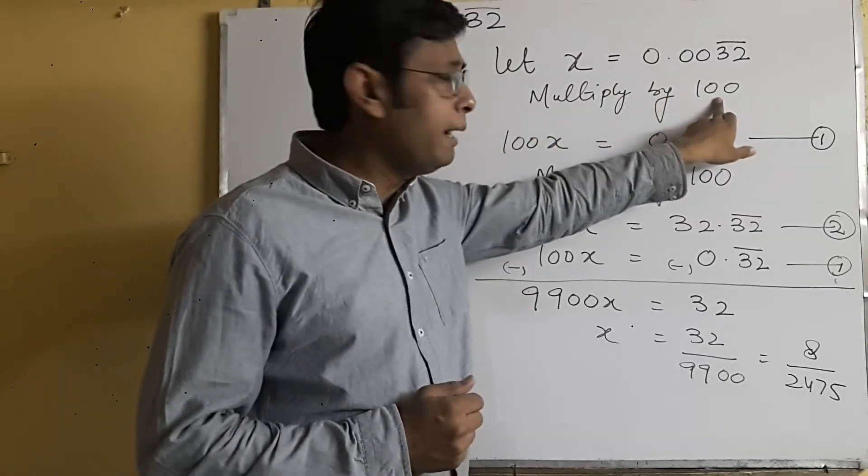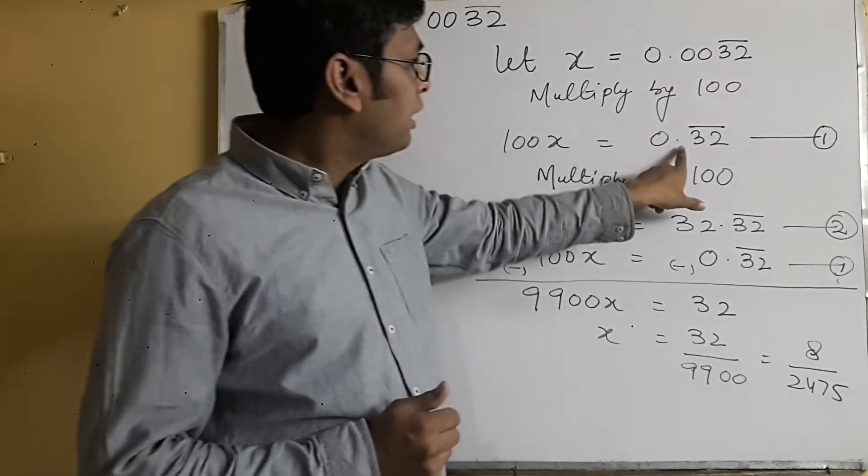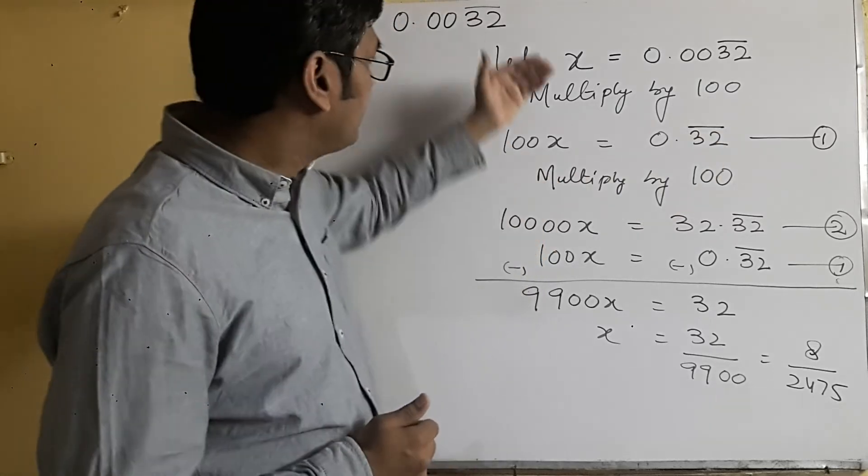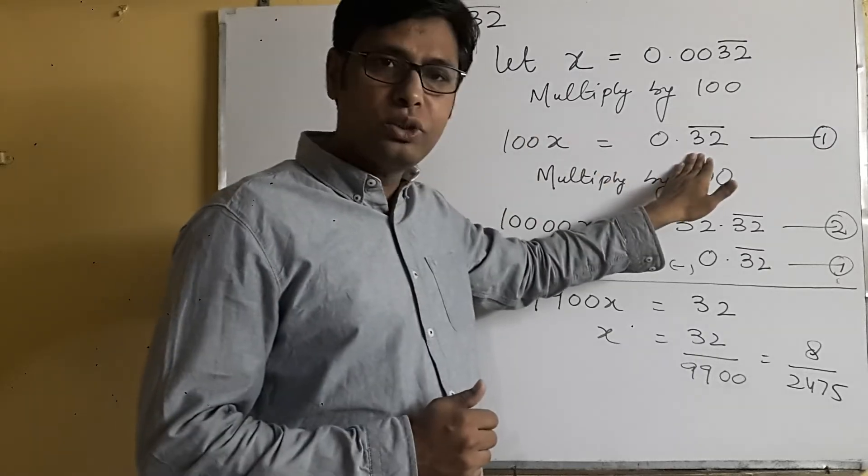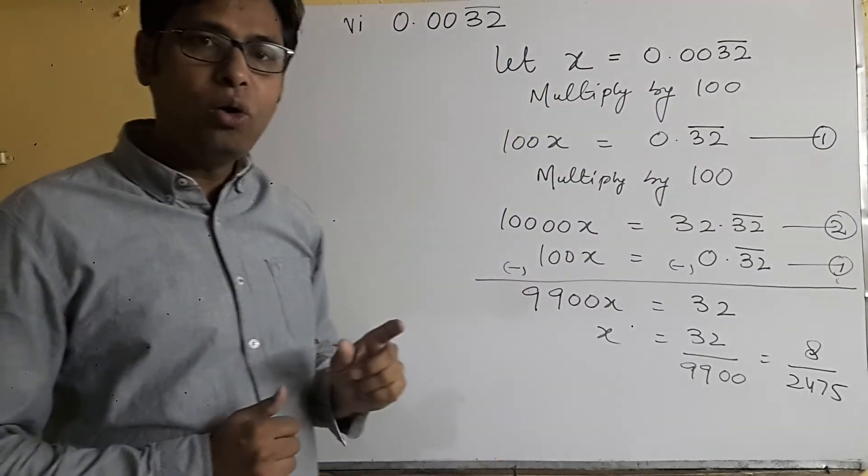So we'll multiply by 100. Now when you multiply this by 100, you'll get 0.32 bar and this will become 100x. Now this is the proper one, so that's why we have taken this as the first equation.